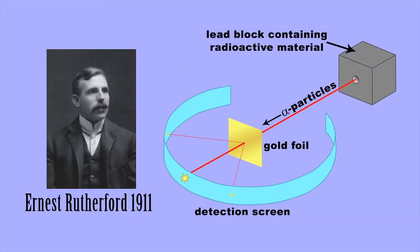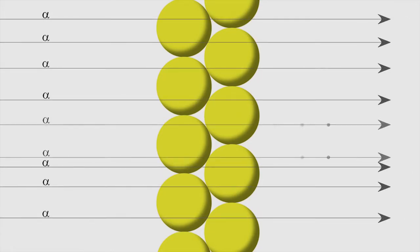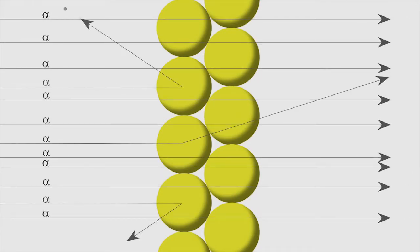In 1911, Ernest Rutherford further modified the model of the atom. He fired high-energy particles, called alpha particles, at gold foil. He found that most of the alpha particles passed straight through, and just a few were deflected.